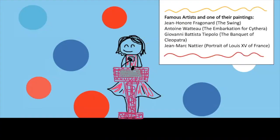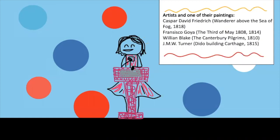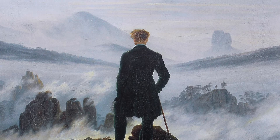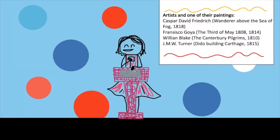Romanticism, which happened between 1800 and 1850, was a type of art where many feelings were displayed, like mystery and the spiritual. There are all kinds of art themes in the era, like beautiful landscapes and religion. Wanderer above the Sea of Fog is a famous painting from the Romanticism Era.